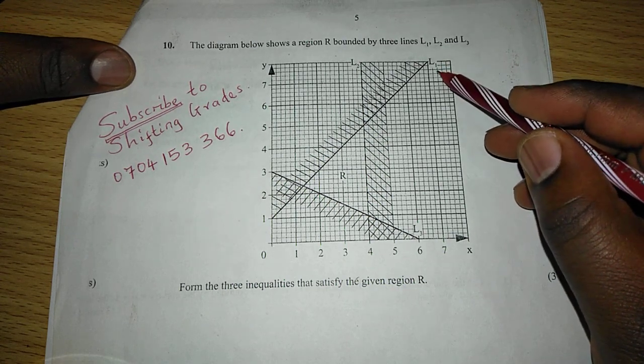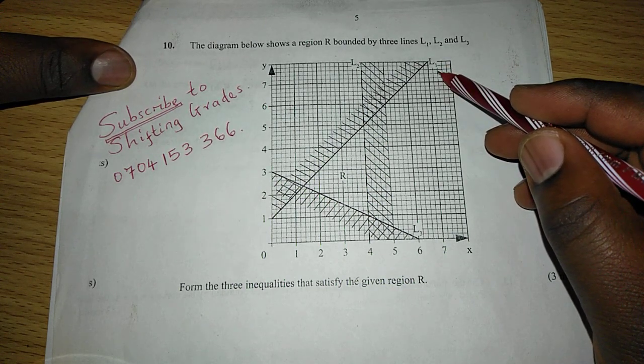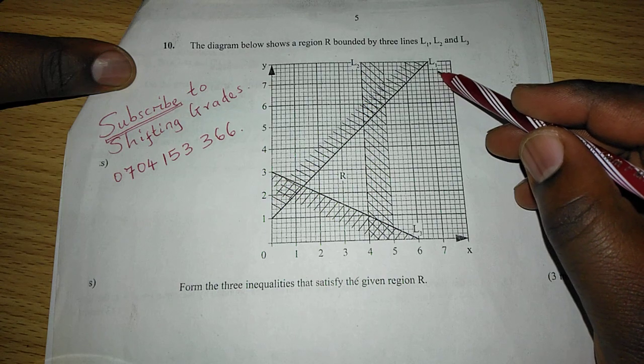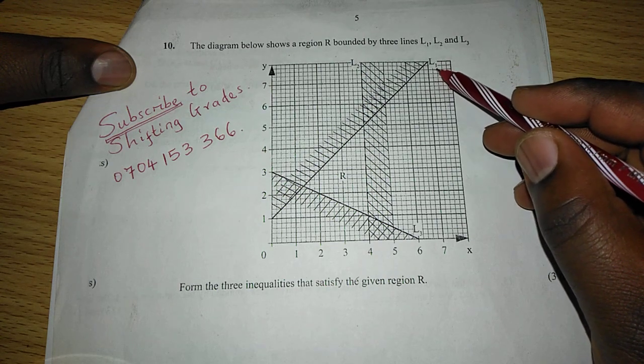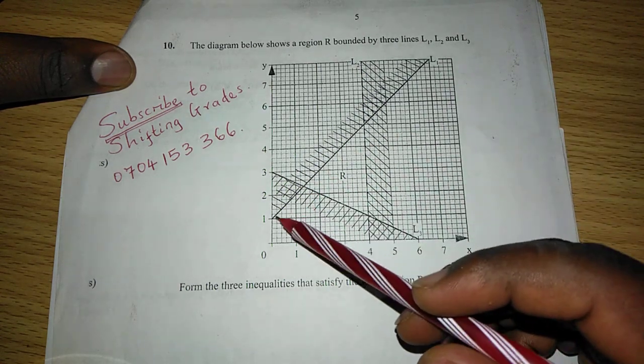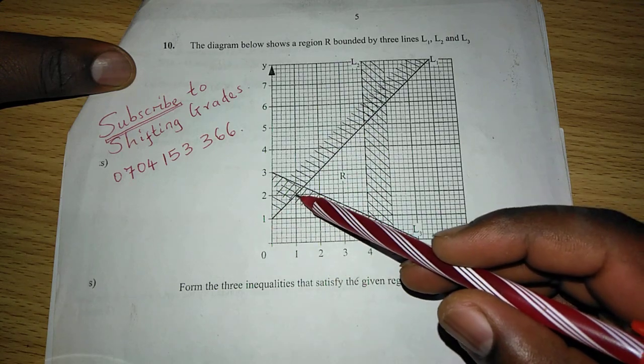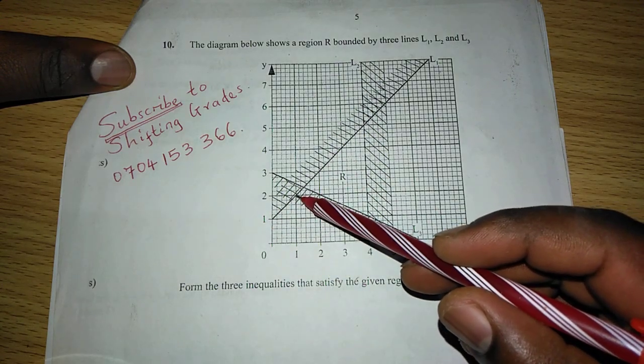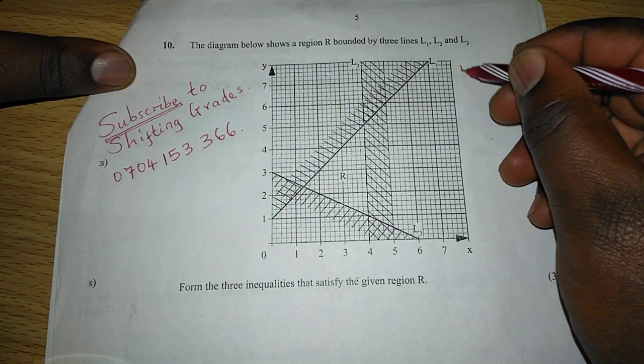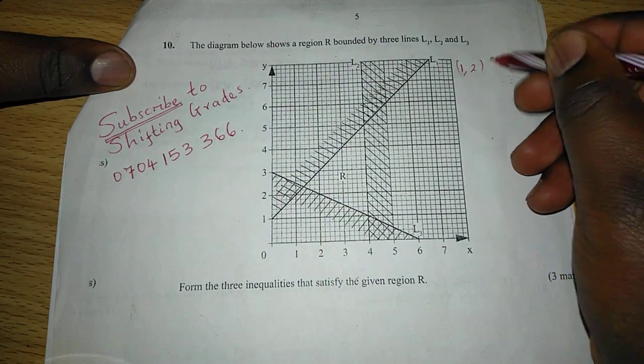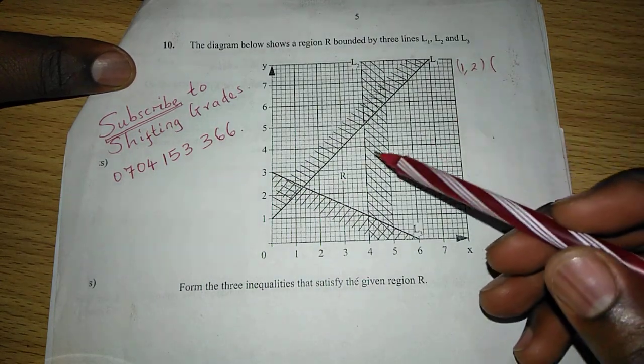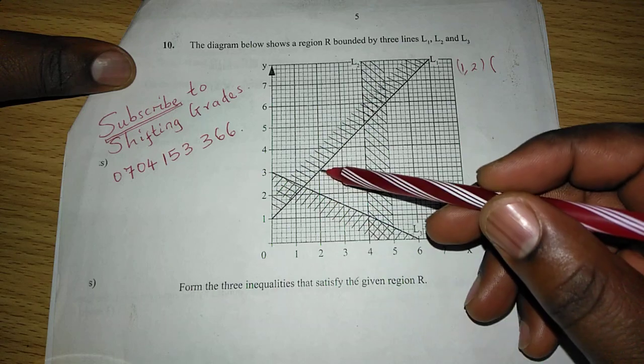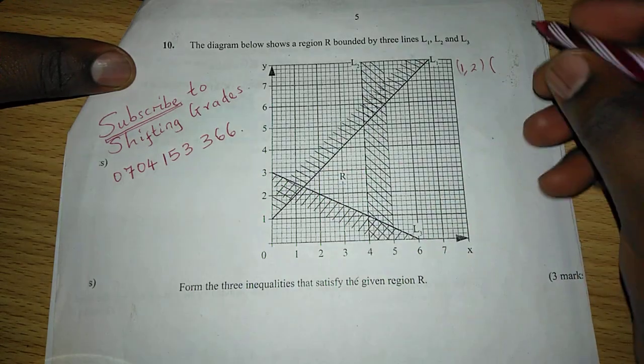Therefore, we can start with L1, whereby we first of all consider two fixed coordinates along line L1. So from L1, we can identify coordinates like coordinate 1, 2 here. So coordinate 1, 2 and another coordinate 2, 3.